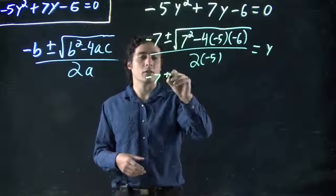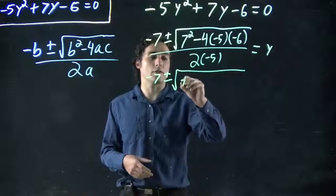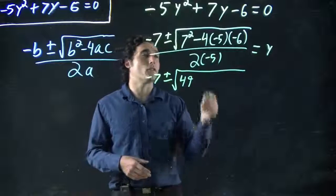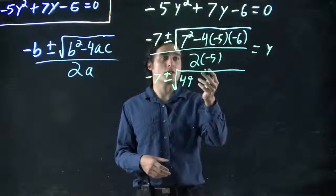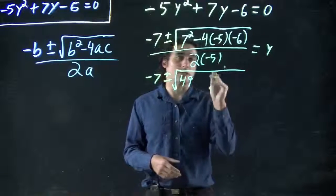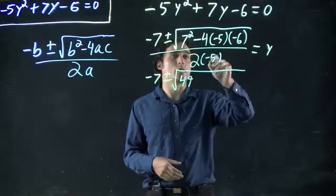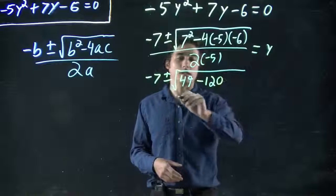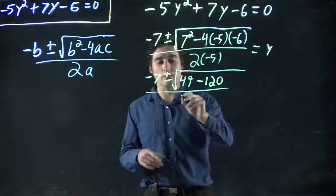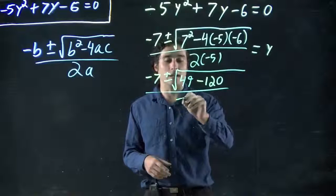Minus 7, plus or minus, square root of 7 squared, which is 49. Minus 4 times 5, or 4 times minus 5, which is minus 20, times minus 6, which brings us back to 120 with the minus in there. 120, and we'll finish this off in the bottom. We've got 2 times minus 5, minus 10, but right away, when I look at this, there's a problem.